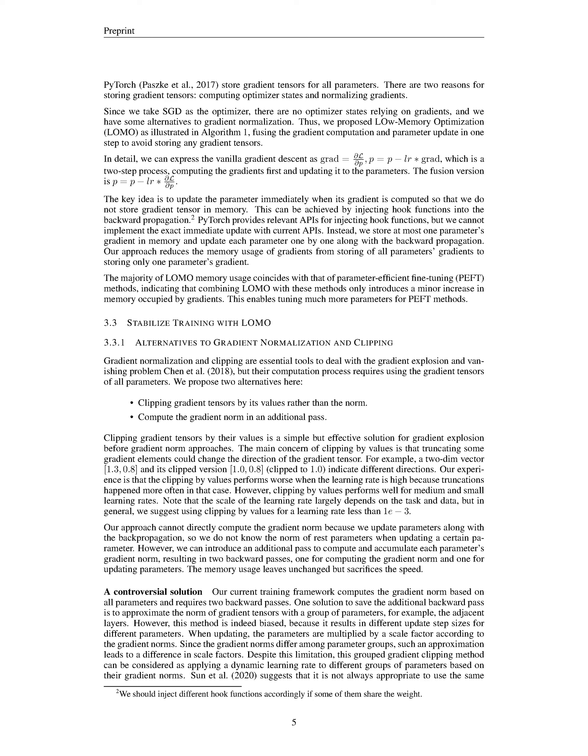In a conventional approach, the computation of the gradient and the update of the parameter are separate steps. In mathematical terms, this would look like first calculating the gradient — the derivative of the loss function L with respect to the parameter — then subtracting the product of the learning rate LR and the gradient from the original parameter. In contrast, the LOMO approach fuses these two steps: we update the parameter by subtracting the product of the learning rate and the derivative of the loss function with respect to the parameter, all in one step.